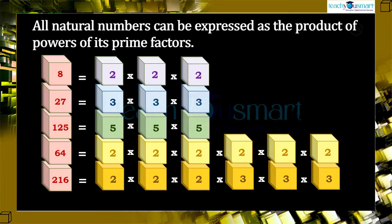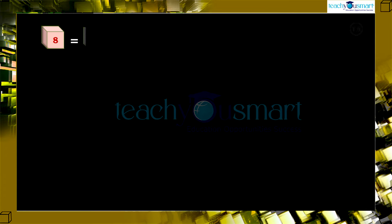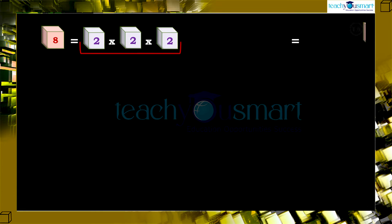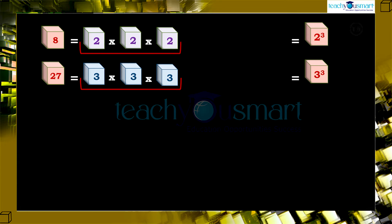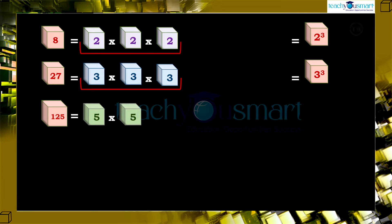Look at this — all these factors can be grouped into 3's. That is, 8 = 2 × 2 × 2 = 2³. 27 = 3 × 3 × 3 = 3³. 125 = 5 × 5 × 5 = 5³.